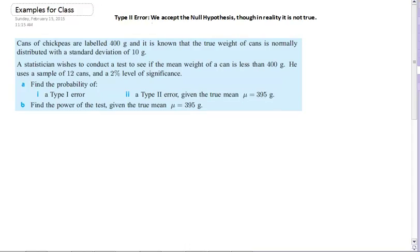So remember a type 2 error is one where we accept the null hypothesis, though in reality it's not true. Obviously if we knew it wasn't true then we would not accept it, but this is just we're going through the significance testing, we accept it, and it turns out that that's not actually true.